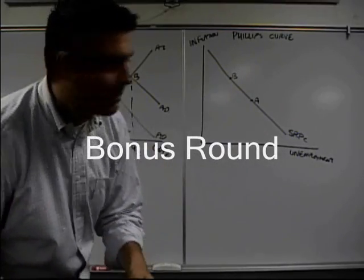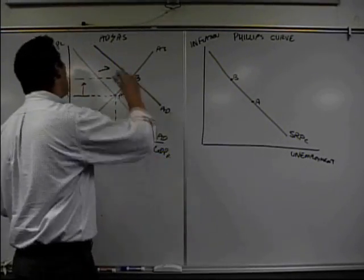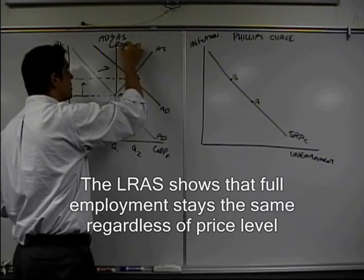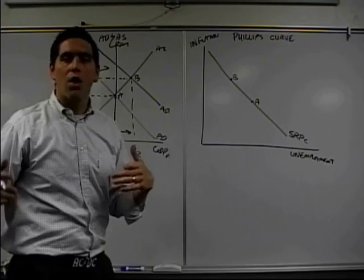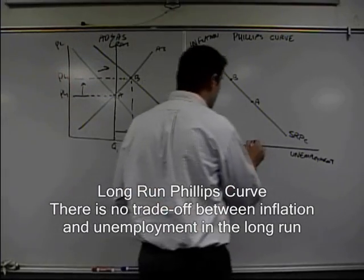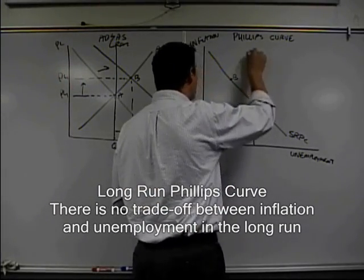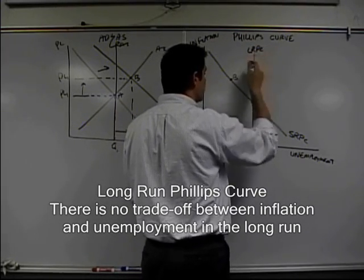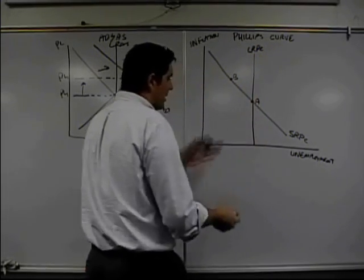Time for a bonus round. We need to look at the long-run aggregate supply, which is this one, long-run aggregate supply, and something called the long-run Phillips curve. Now, at combination A, you'd assume this thing called the long-run Phillips curve is going to run right to the same point, which it does. That's the concept.